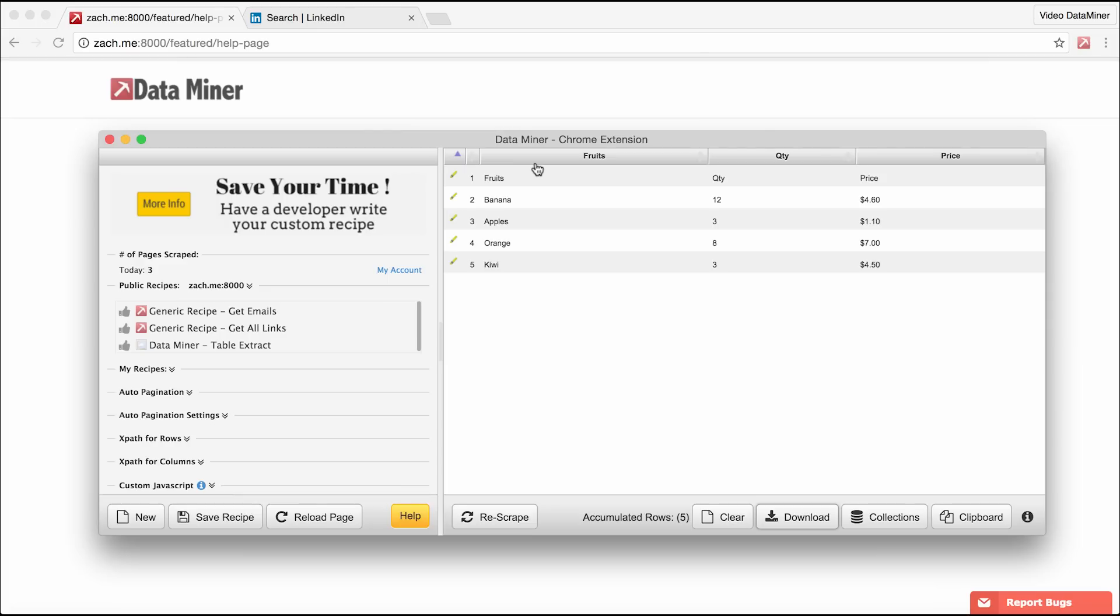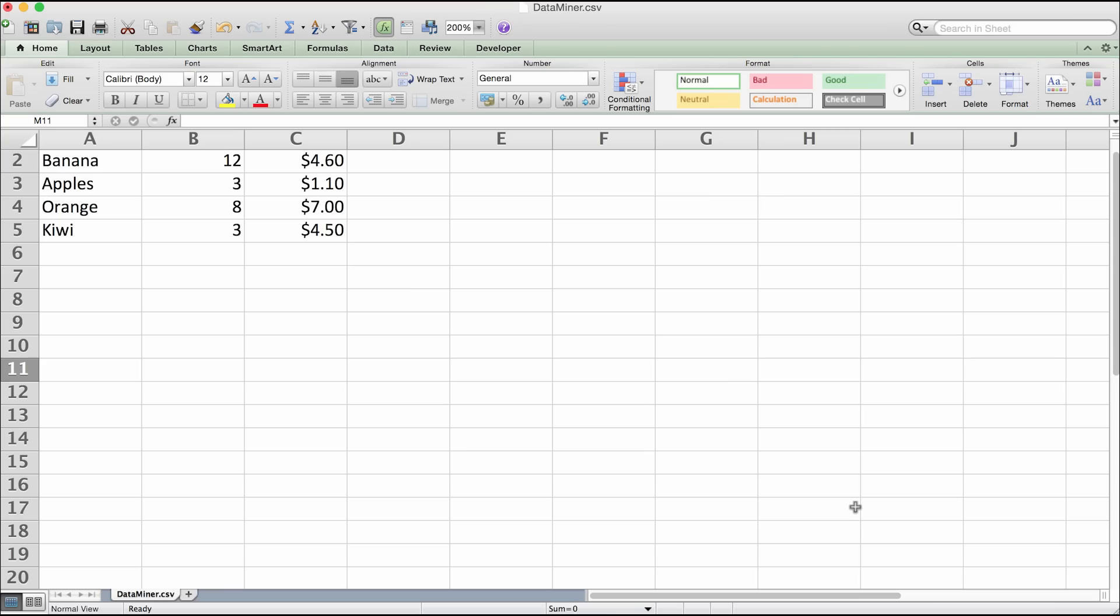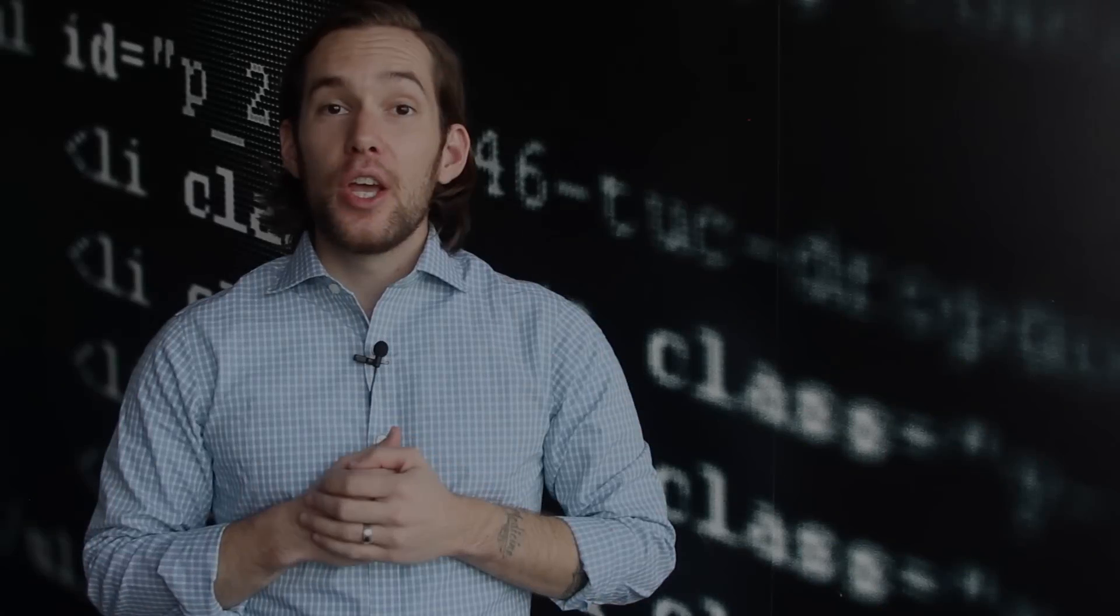Now that we have the data, the next step would be to save the information. To do that, simply click Download in the bottom right corner, and if you wish, open it in Excel. You just extracted and saved information. Congratulations!